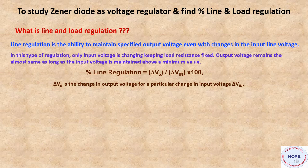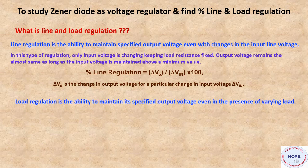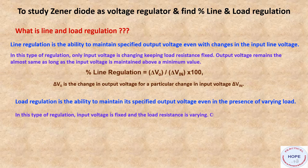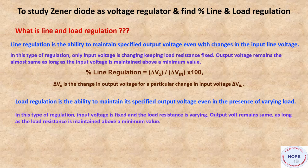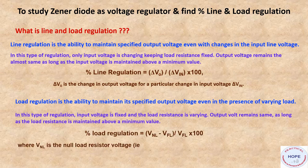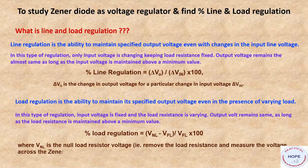Load regulation is the ability to maintain a specified output voltage even in the presence of varying load. Here only input voltage is fixed and load resistance is varying. Output remains the same as long as the load resistance is maintained above a minimum value. Mathematically it equals (V_NL minus V_FL) divided by V_FL, multiplied by 100, where V_NL is the no-load voltage and V_FL is the full-load voltage when load current is maximum.